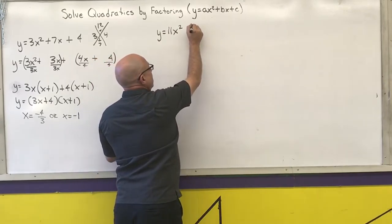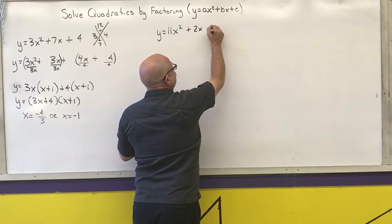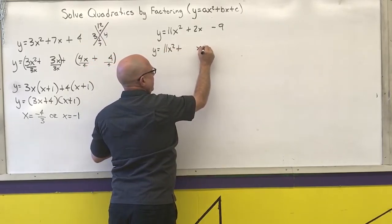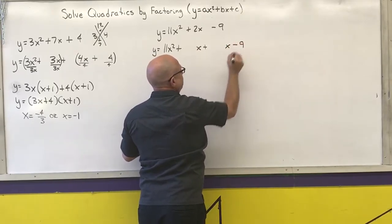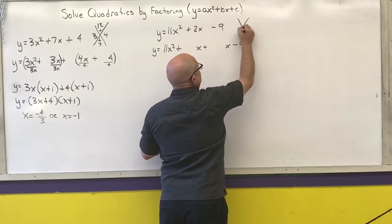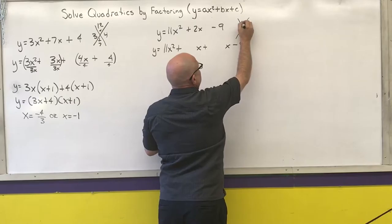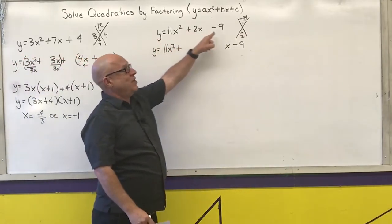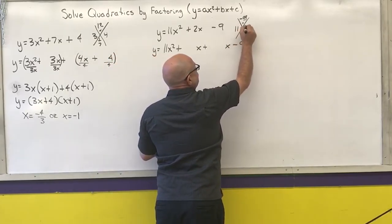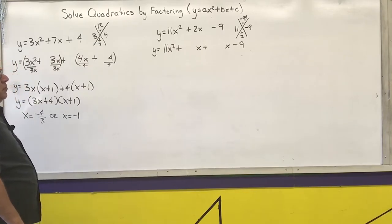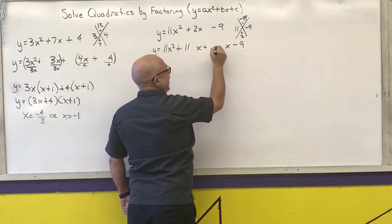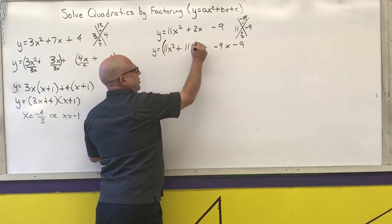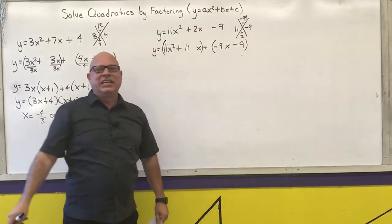Next: y equals 11x squared plus 2x minus 9. I do my setup — copy the first term, plus blank x plus blank x, minus 9. I want two numbers that multiply to negative 99 that add to 2. Well, 11 minus 9 is 2. So I am going to put the 11 with the 11, then the negative 9 here. This is the reason I do the setup first — because when I put parentheses around the first two terms and the last two terms, I always have that plus sign in between.